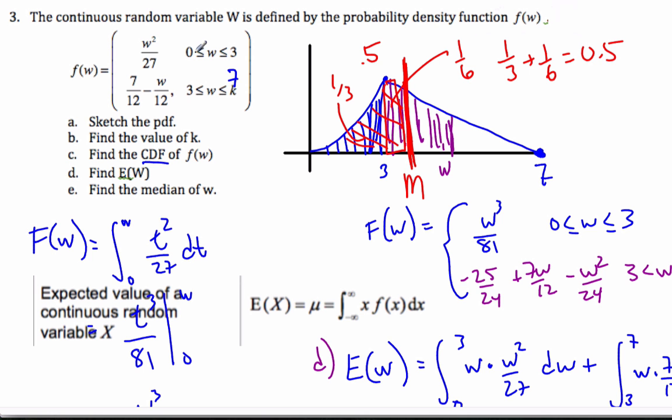So in doing this piecewise function of the continuous random variable, if we want to find the cumulative distribution function, we do it in parts. We have this part, and then we add its area onto the second part. Expected value, we use our formula from the formula sheet. And then finally, the median, we have to add up to 50%.